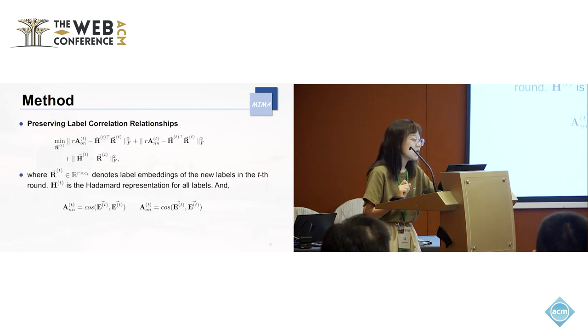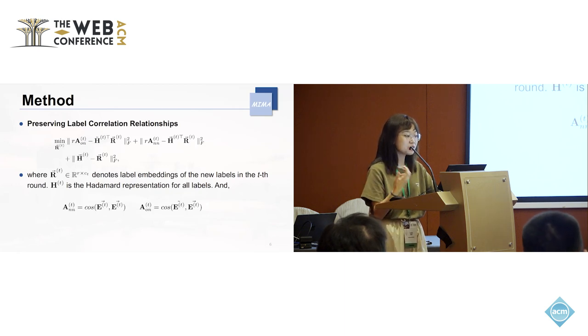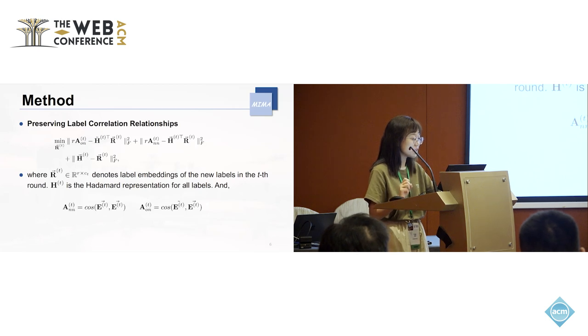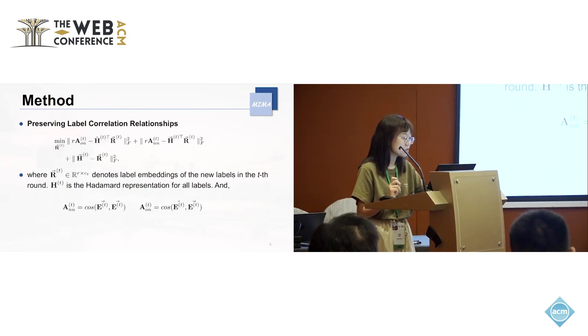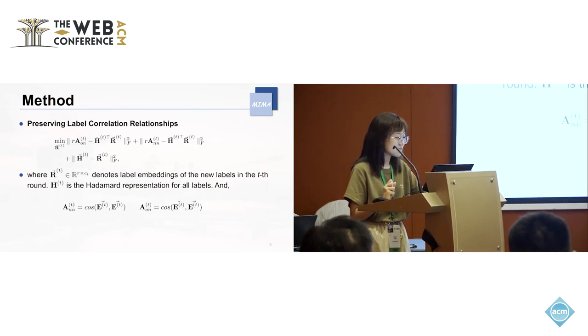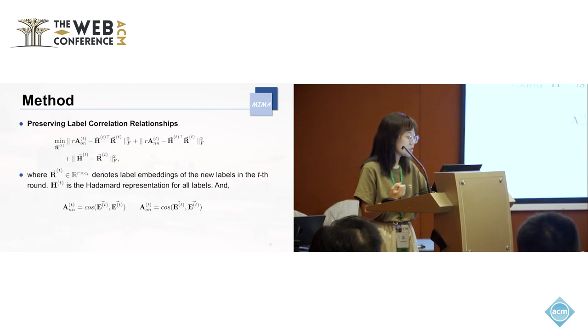We know that maintaining correlation relationships among classes is very important for retrieval tasks. Because it helps cluster similar data together. When samples of the same classes maintain similarity in feature space, the method can more easily generalize to newly coming data. So to this end, we design this loss function.